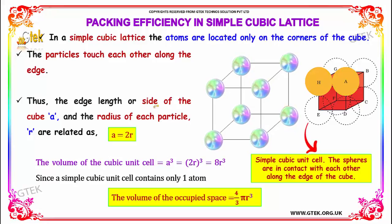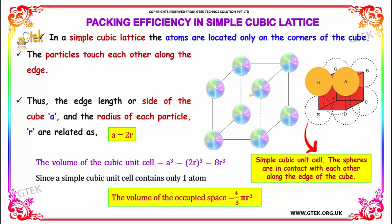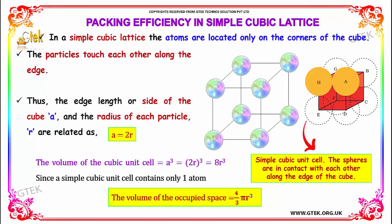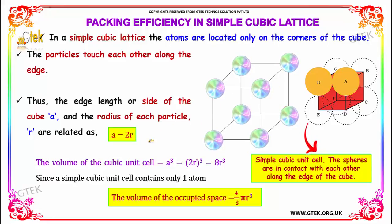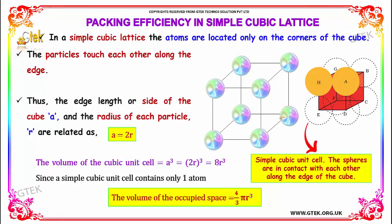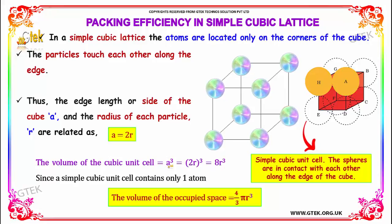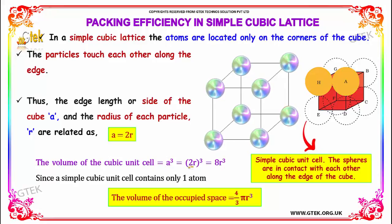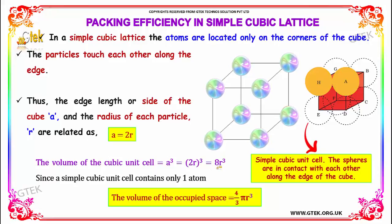The edge length or side of the cube A and the radius of each particle R are related as A is equal to 2R. So the volume of the cubic unit cell, A³, is equal to (2R)³, which is equal to 8R³.